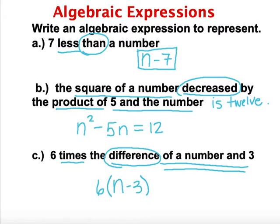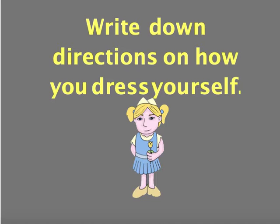Now that we've gotten through a little bit of language review, let's talk about how we can tie this to equations. With equations, I'll use a real-world example: write down the directions on how you would dress yourself. In the morning you're getting dressed, and if we make a generic outfit, we're wearing shirts, pants, undergarments, socks, and shoes.